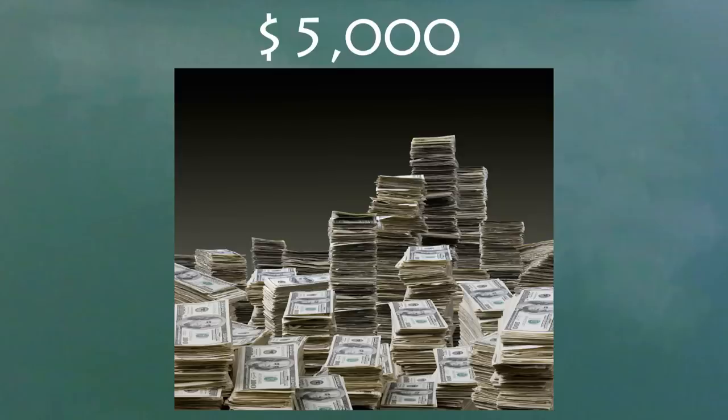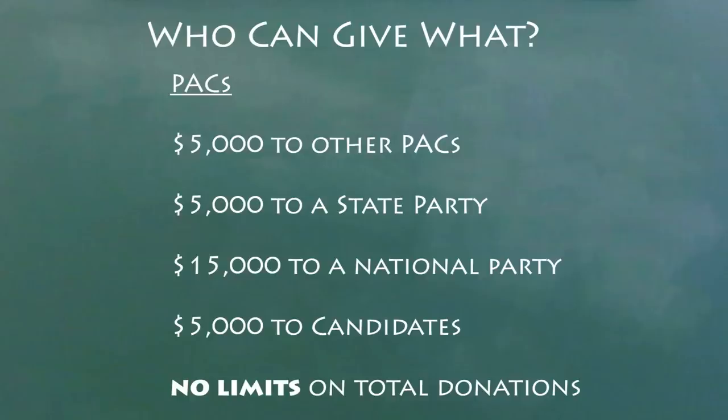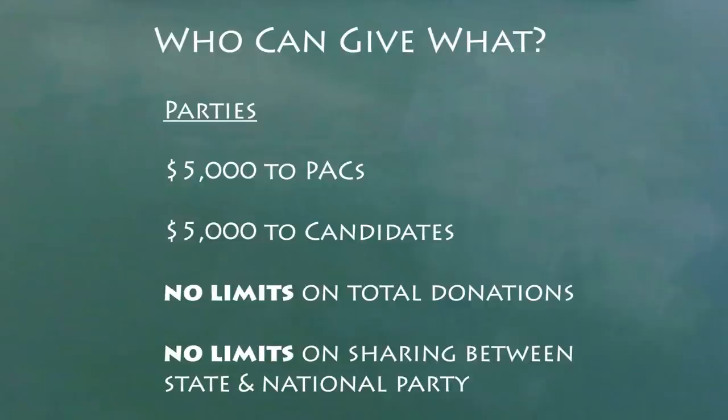An individual can give $5,000 to a PAC, $10,000 to their state party, and $28,500 to their national party, though they can't give more than $42,700 total to candidates and $65,500 to all PACs and parties. A PAC can give $5,000 to a candidate and can also give $5,000 to another PAC or a state party. PACs can give $15,000 to a national party. State and national parties can give up to $5,000 to candidates and another $5,000 to PACs, and can share as much money as they want between each other.